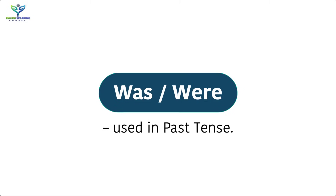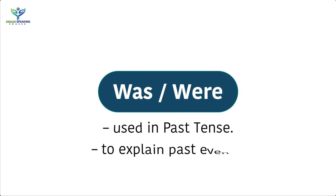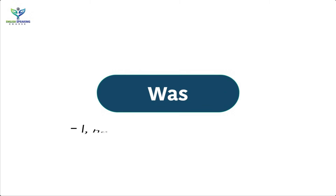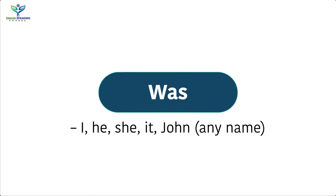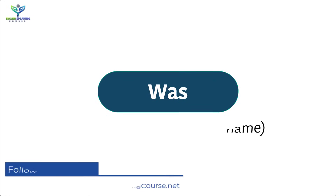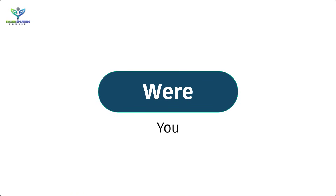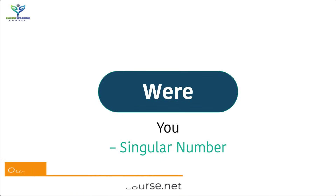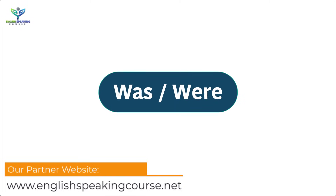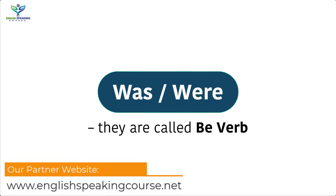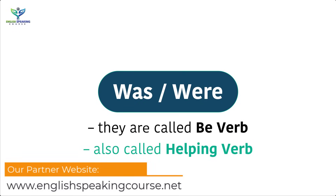'Was' and 'were' are used in past tense to explain past events. 'Was' is used with I, he, she, it, and with any singular name. 'Were' is used with we, they, you, and with plural subjects. 'Were' always sits with 'you', although 'you' is singular number. In grammar they are called be verbs, also called helping verbs.